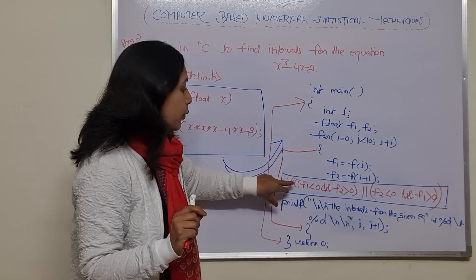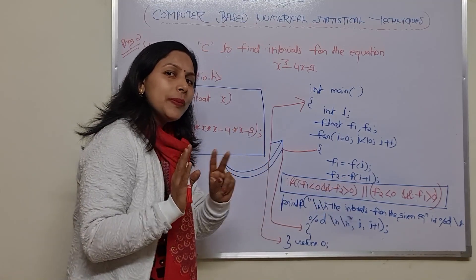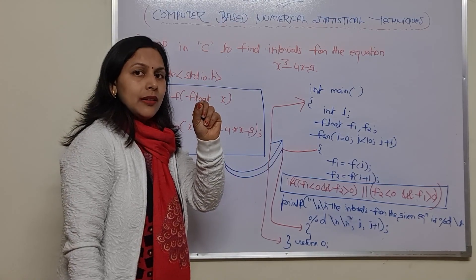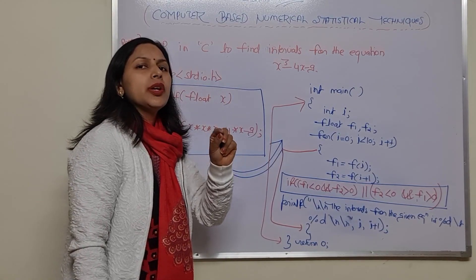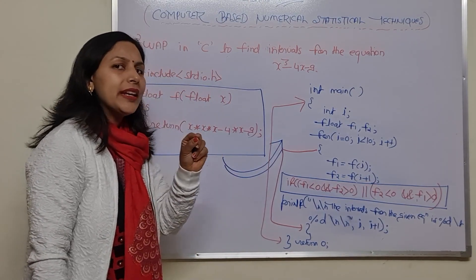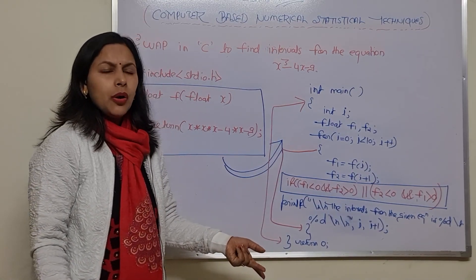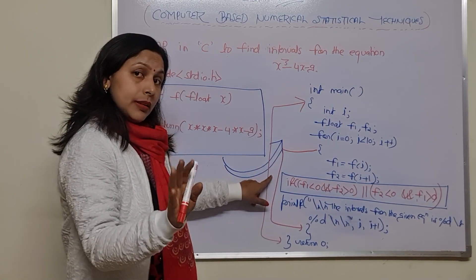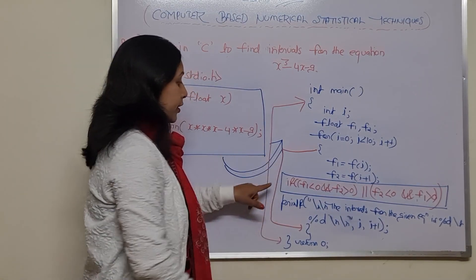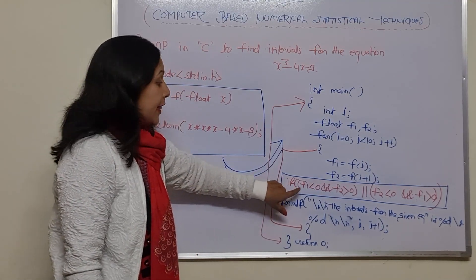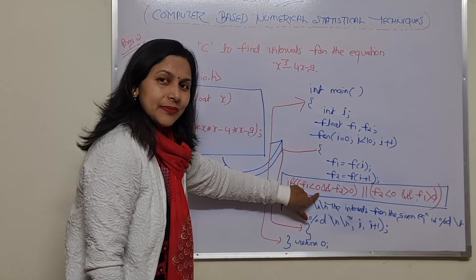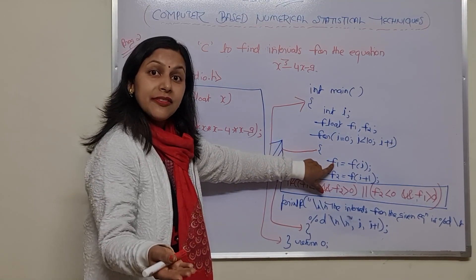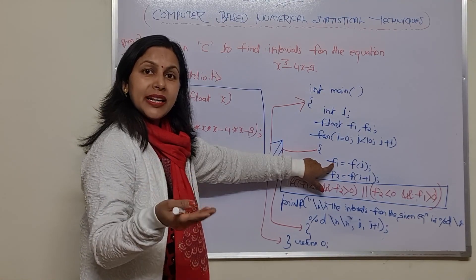After that, the comparison would be done. We write one if condition. As I have told you, the root for any equation always lies between a positive and a negative number — or a negative and a positive number. So I have written one condition: if the value for f1 is less than 0, that means f1 is negative. In the first iteration, it is negative because we were getting minus 9.